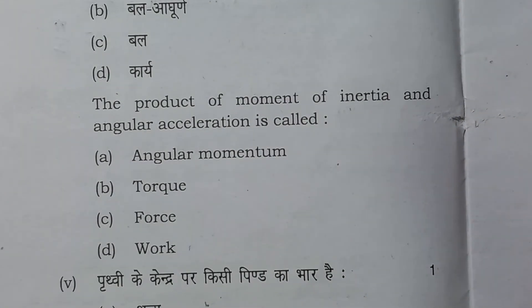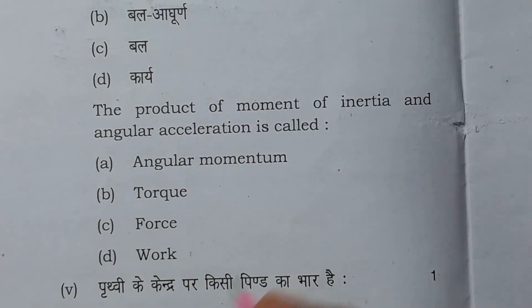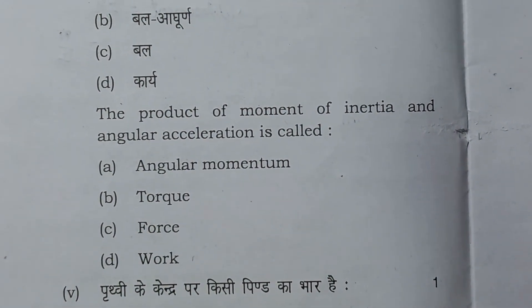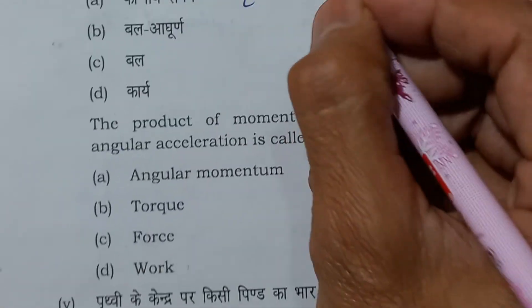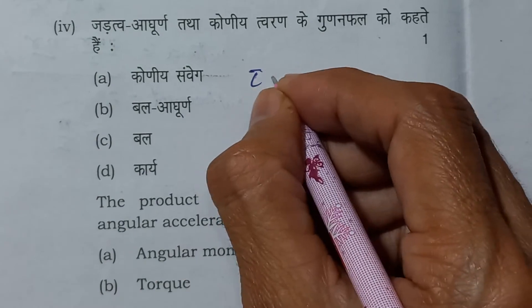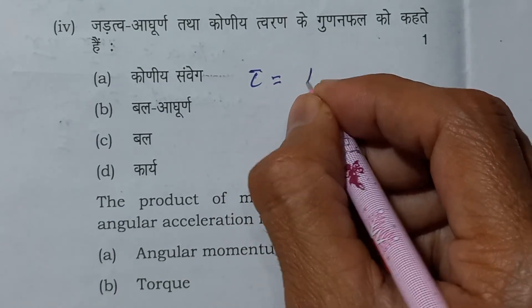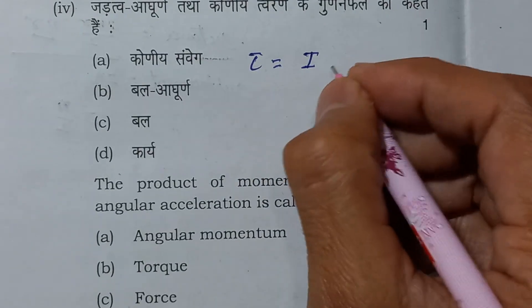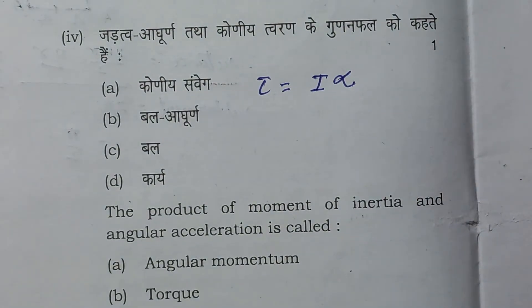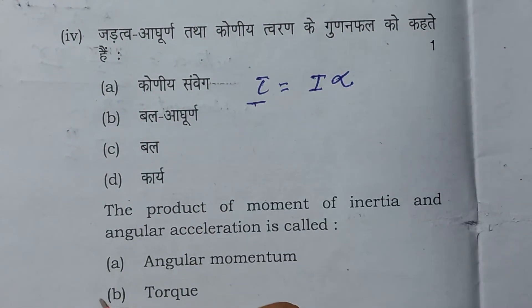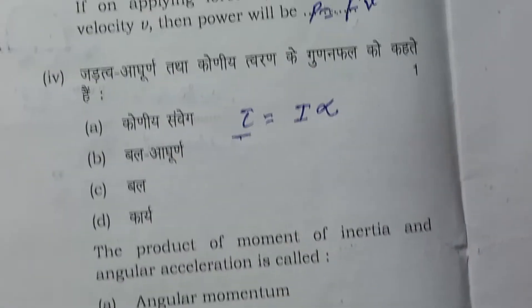Next question. The product of moment of inertia and angular acceleration is called, we know that this is moment of inertia and angular acceleration. What is this? This is torque.